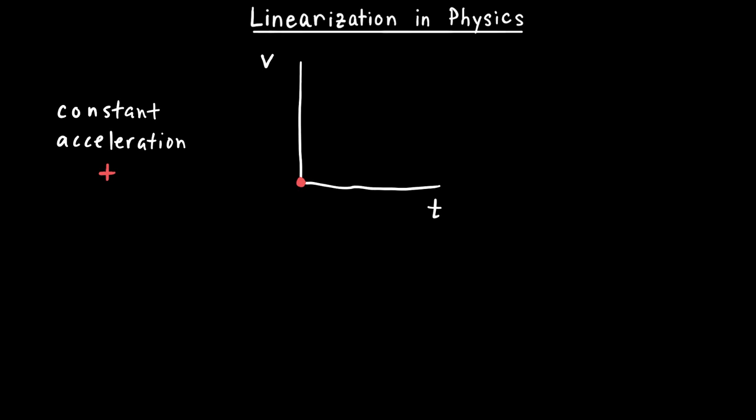Its velocity would increase. Those of you who have studied kinematics know that the slope of a velocity versus time graph represents the acceleration of the object. So this graph should have a positive constant slope because the acceleration is positive and constant, meaning the acceleration is represented by the slope.